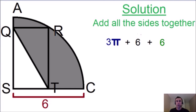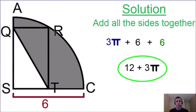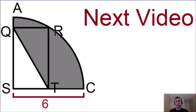We have now solved for all sides of the shaded area: 3π plus six plus six. Since six plus six equals 12, our solution is 3π + 12. I hope you enjoyed this video. If you want to try another one of my math riddles, check out my next video — the link is on screen. Thank you for watching, don't forget to subscribe, and I'll see you in my next one.